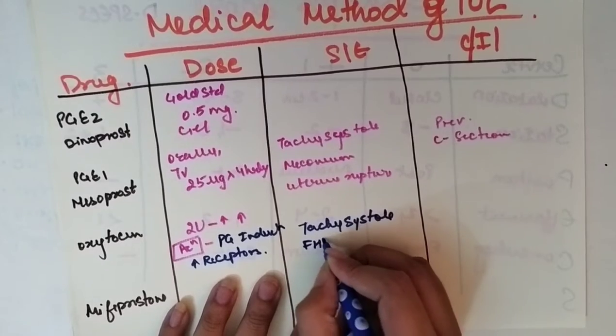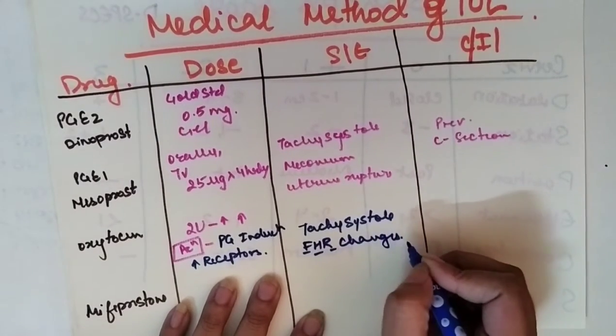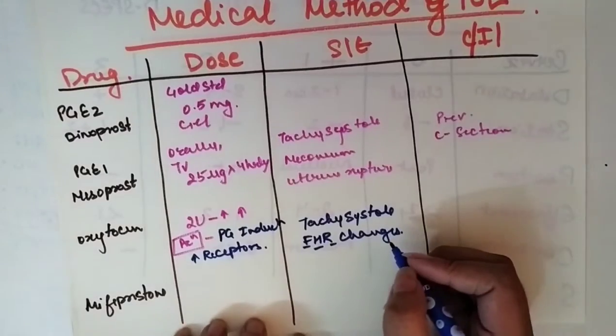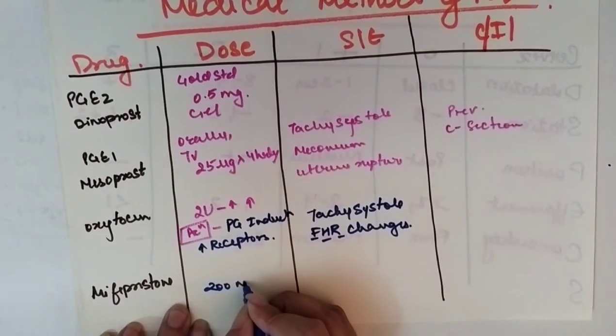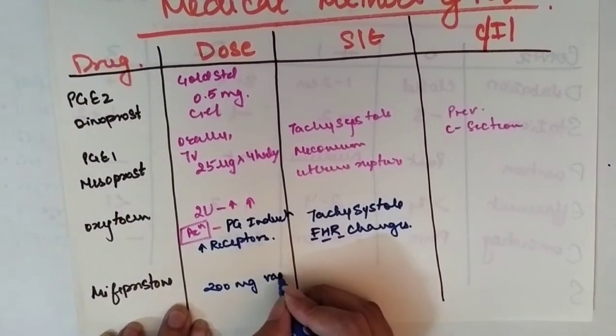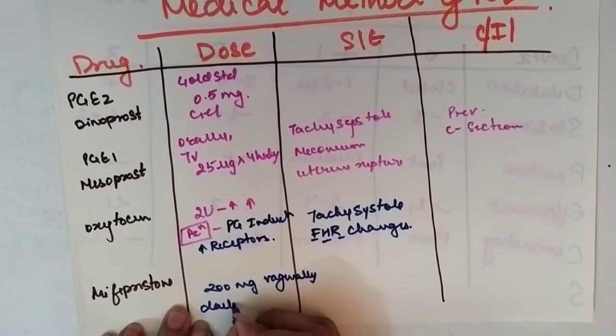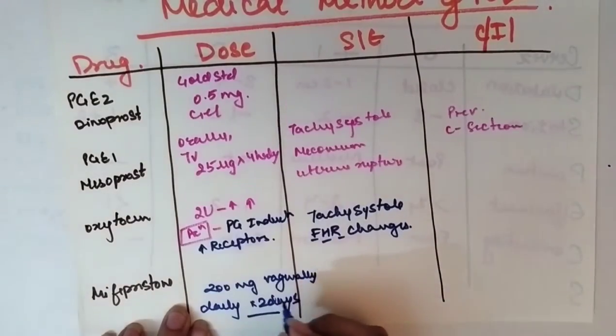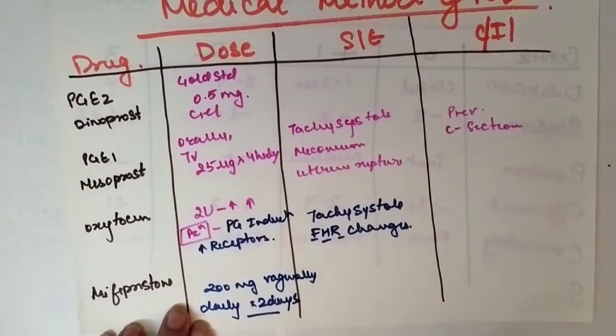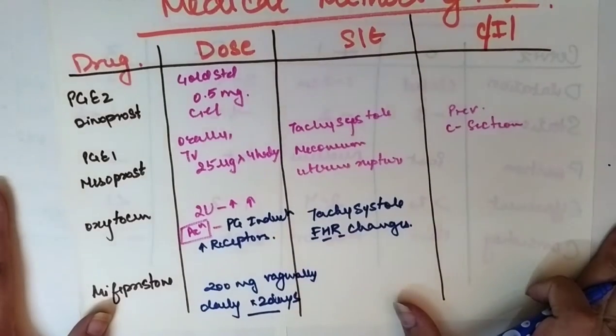Mifepristone is given in 200 mg dose vaginally, daily, for two days. 200 mg for two days. This is the four drugs used in induction of labor.